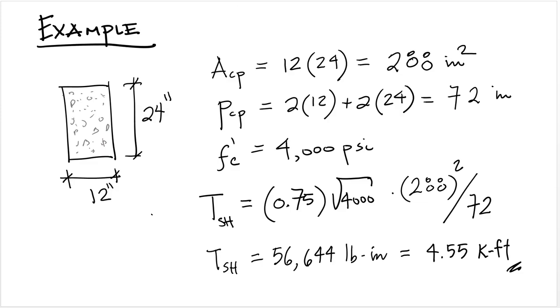Let's do an example. So say we have a concrete member with a cross section with a base of 12 inches and a height of 24 inches. So ACP is the area enclosed by the perimeter, which is 12 times 24, that comes out to 288 inches squared. The perimeter is 2 times 12 plus 2 times 24, that comes out to 72 inches.